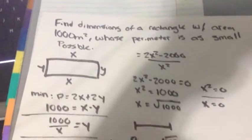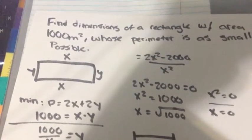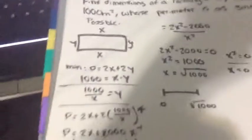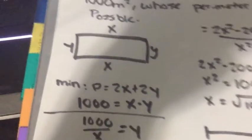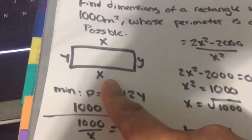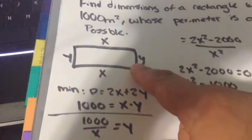So you find, the question is to find the dimension of a rectangle with an area of 1000 meters squared where the perimeter is as small as possible. So first you draw your rectangle or your drawing. So you call the width x and the height y.